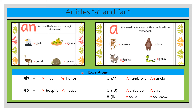There are some exceptions or extra rules. For example, when we have the letter h — the letter h can be silent sometimes. When the letter h is silent, we are going to use an. For example, an honor, an hour. In this case, the letter h is mute. You don't pronounce the letter h, so you need to use an: an hour, an honor.